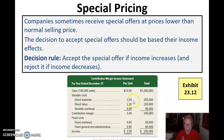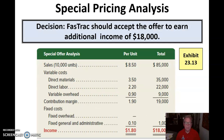Our variable costs are direct material, direct labor, and variable overhead. The total contribution margin is $3.40 when we subtract those variable costs from net sales. Fixed costs are $0.60 and $0.80 for general and administrative and fixed overhead — $60,000 and $80,000. So we make $2 per unit, or $200,000 for this special order. Should we accept an offer to earn additional income of $18,000? Yes — we've determined we're going to make $1.80 incrementally on this special offer, totaling $18,000, so we should accept it.